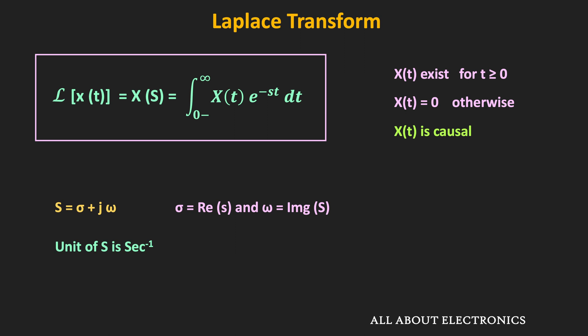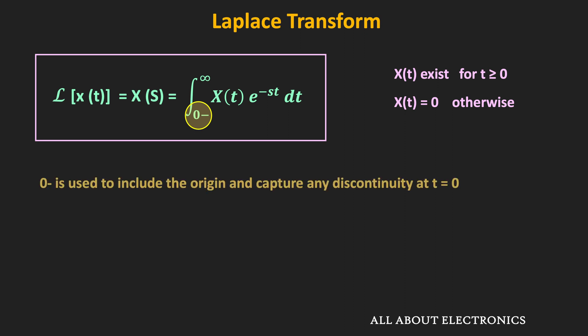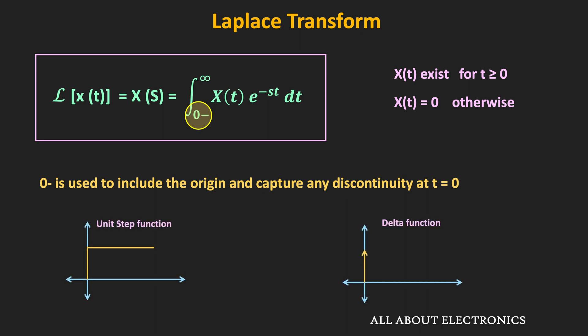Regarding the integration limit, instead of 0, we have written 0⁻. This 0⁻ is used to include the origin and to capture any discontinuity at time t equal to 0. Basically, this 0⁻ is used to include functions such as the Dirac delta function and the unit impulse function, because these functions have a discontinuity at t equal to 0.